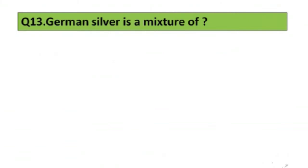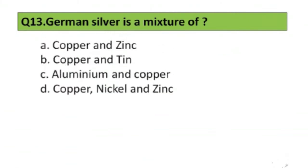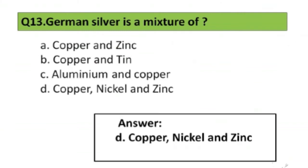Question number 13. German silver is a mixture of: A. Copper and zinc, B. Copper and tin, C. Aluminium and copper, D. Copper, nickel and zinc. The right answer is option D, Copper, nickel and zinc.